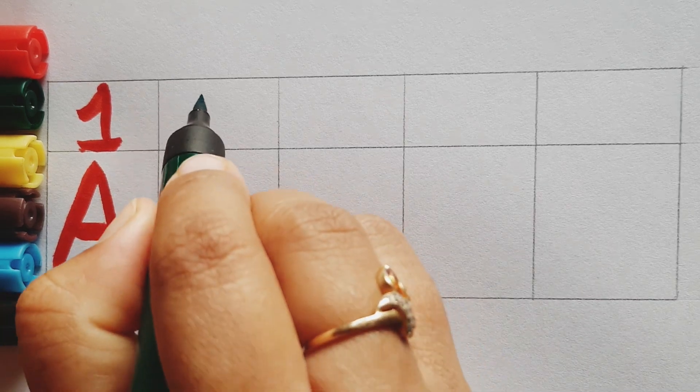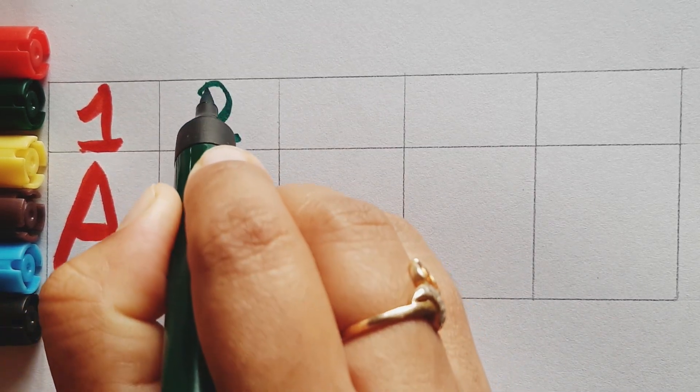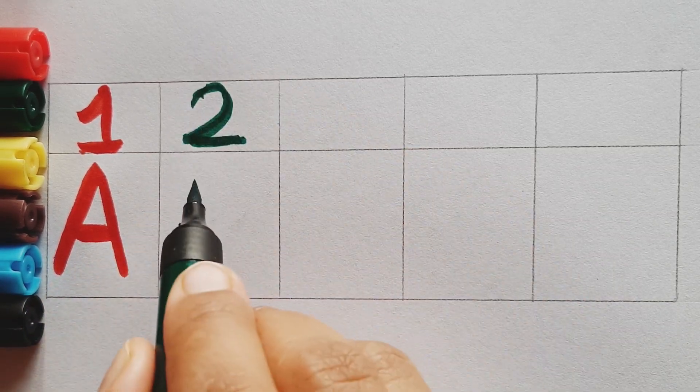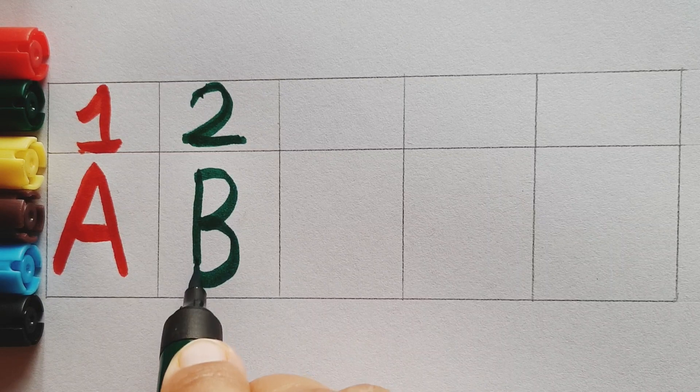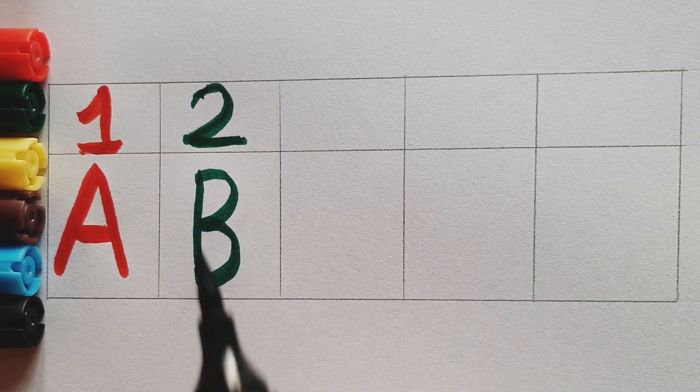Number two, green color. Number two, green color, capital letter B. B for ball. Ball means gend.